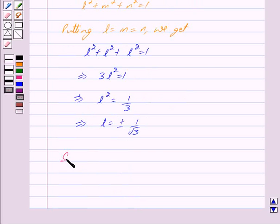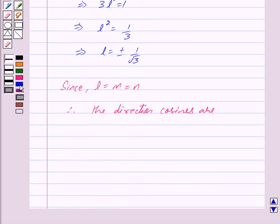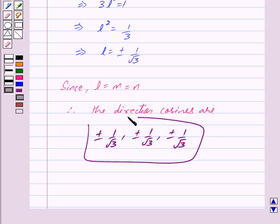Now since we are given that the value of all direction cosines is the same, that is L equals M equals N, therefore we get the direction cosines are plus minus 1 upon root 3, plus minus 1 upon root 3, plus minus 1 upon root 3. This is our answer.